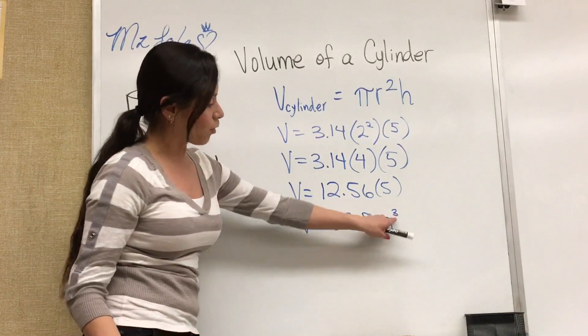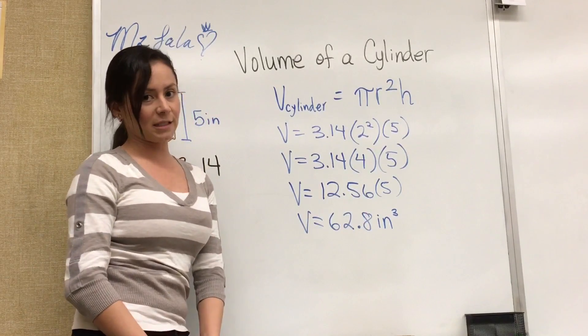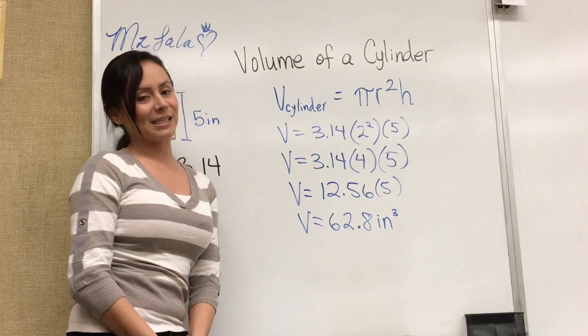And do not forget to put your units which are inches. And because it's three-dimensional it must be to the third power. So this is 62.8 cubic inches. And that's how you find volume of a cylinder.